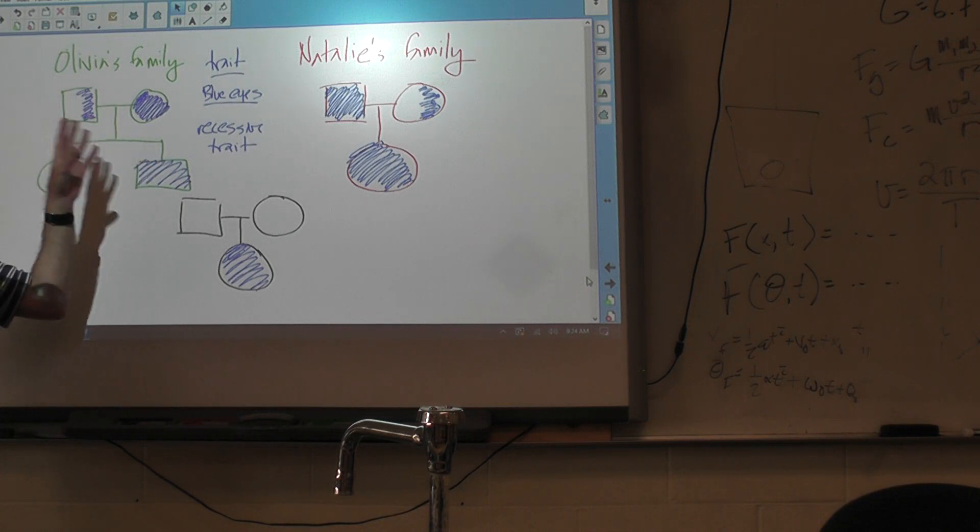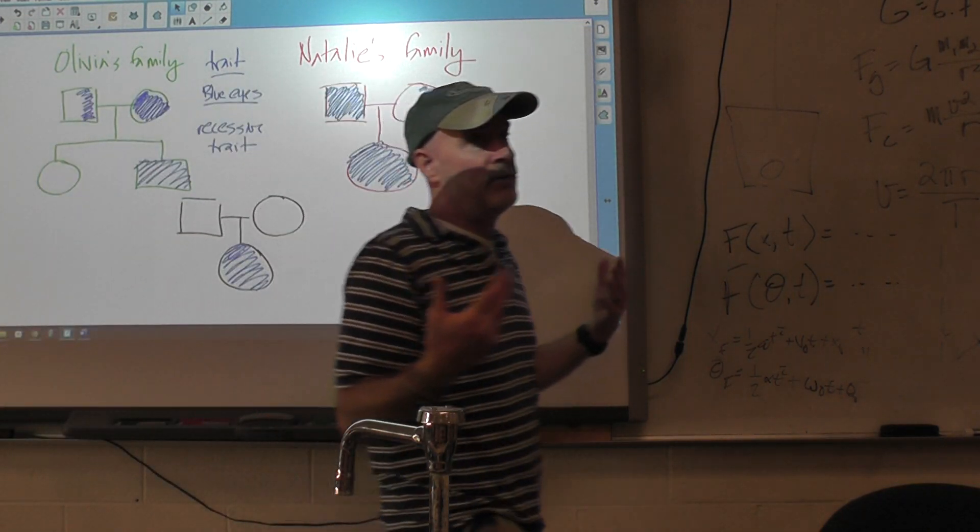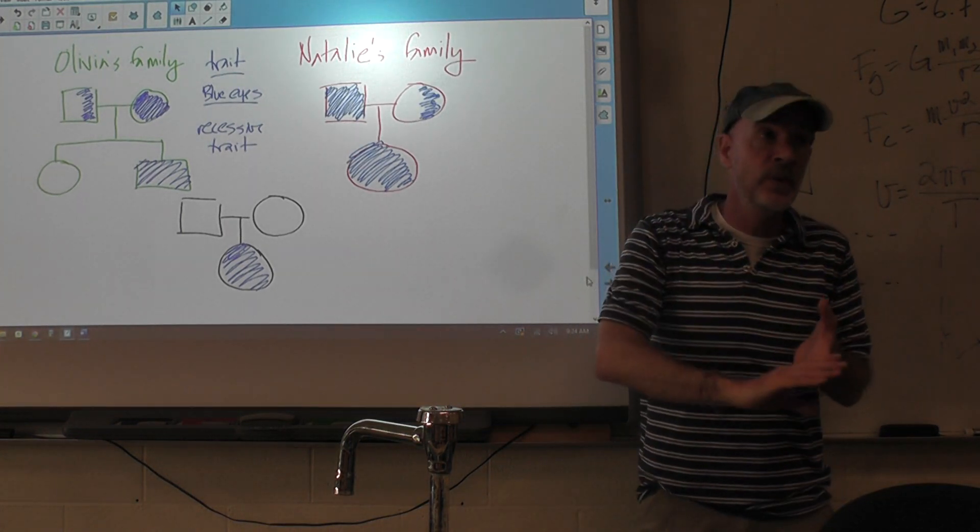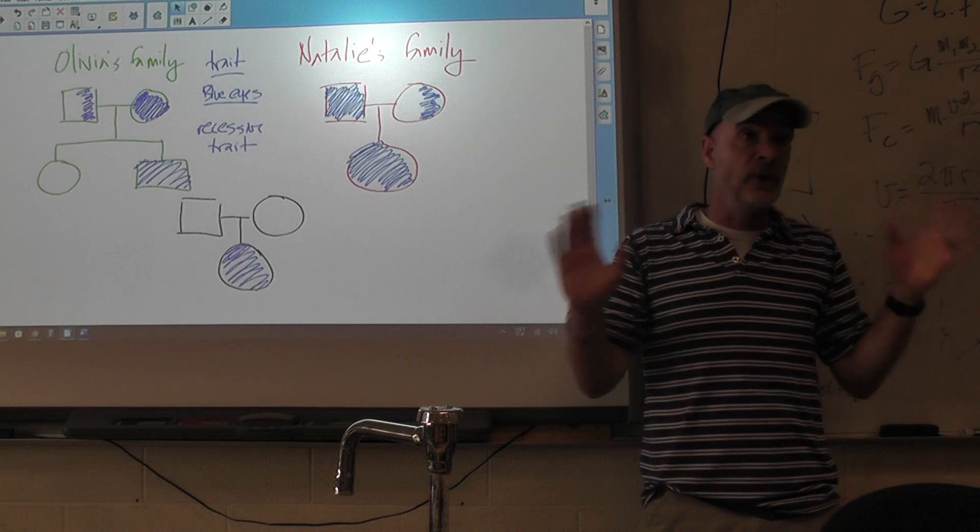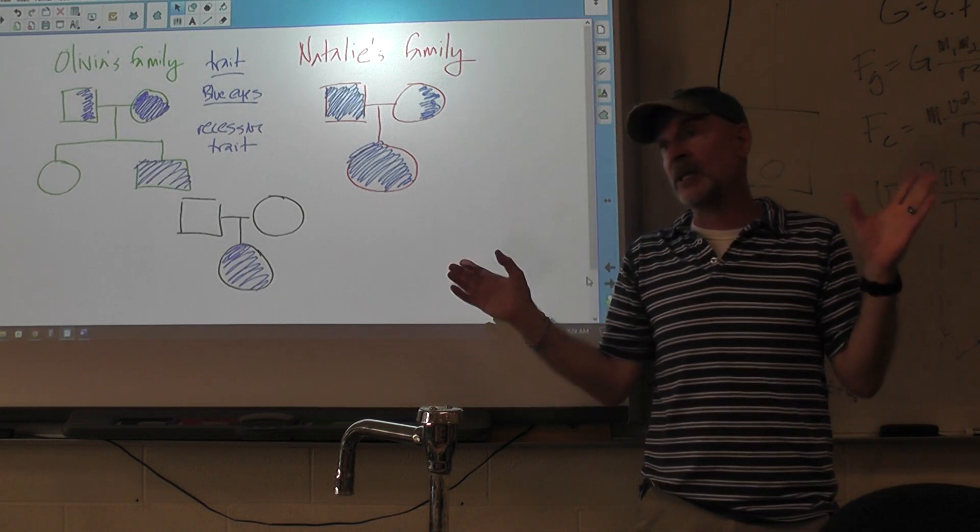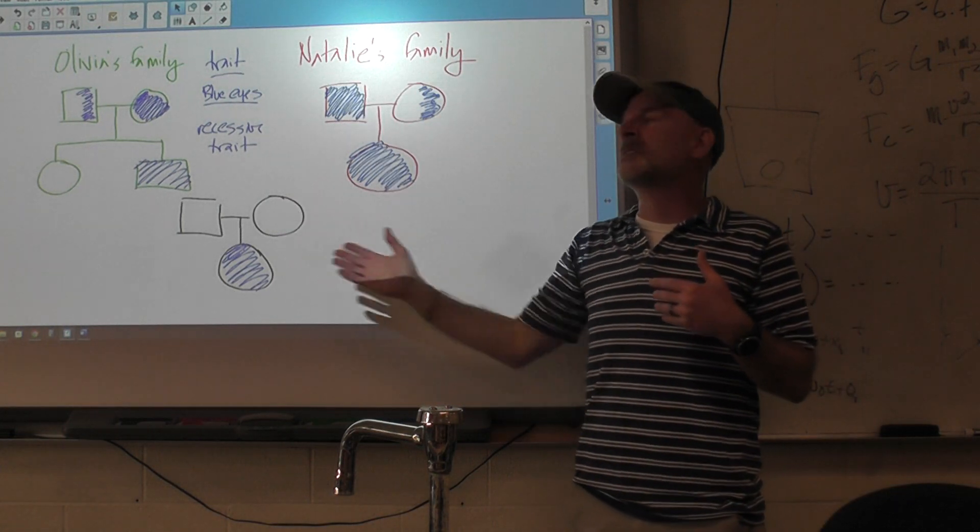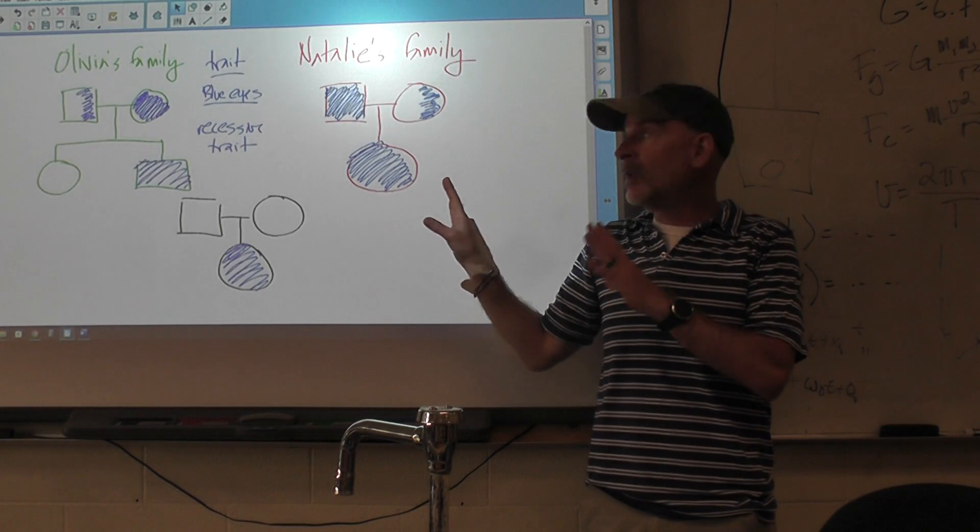Now again, this is an oversimplification. So if we actually went back, if we did a genetic analysis, likely what we would find, and I'm guessing here because I don't know for sure, but likely what we would find is there's more than one gene for eye color. And I know there's more than one allele. And I know that there are patterns of codominance and weak dominance and stuff. So it's not going to look just like this. But the logic works. The logic works.